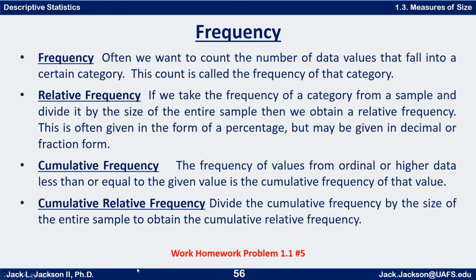There are four things we might be interested in: frequency, relative frequency, cumulative frequency, and cumulative relative frequency. Frequency is just the count of how often something occurs — for example, count how many presidents were Federalist, or count how many for each party. Relative frequency is when we take the frequency of a category from a sample and divide it by the size of the entire sample to obtain a relative frequency — it's relative to that total amount. We can think of it as a percentage of the total, and it's often given as a percentage, though it may also be in decimal or fractional form. Fractional form gives the exact value; percentages and decimals are typically rounded.